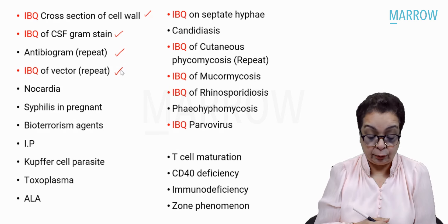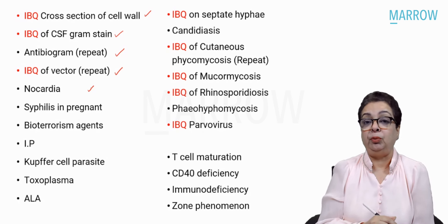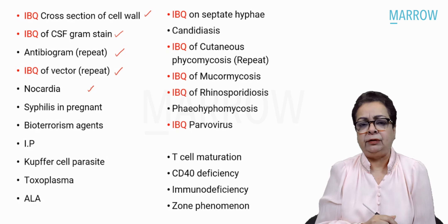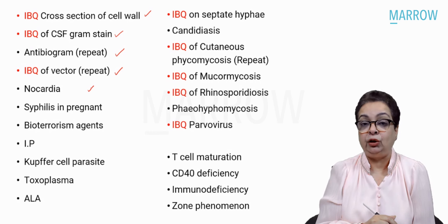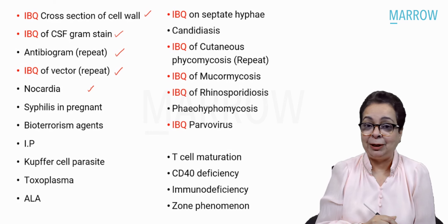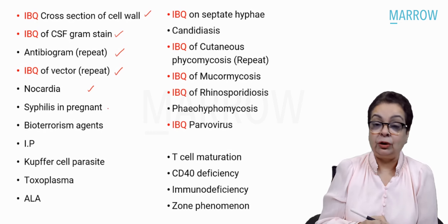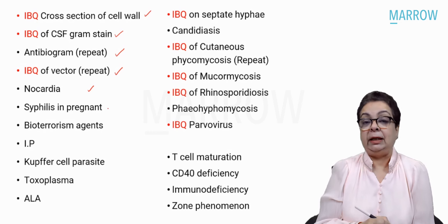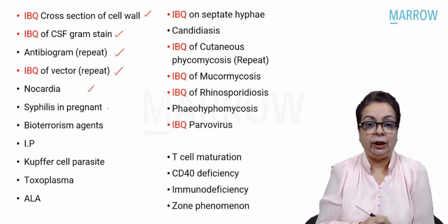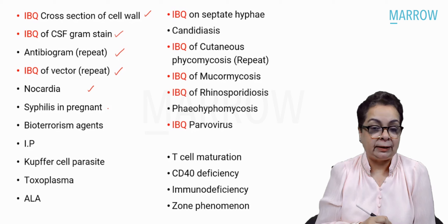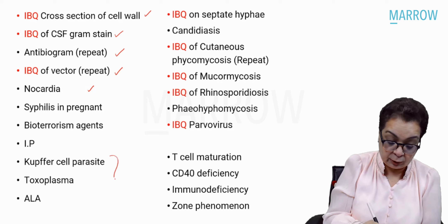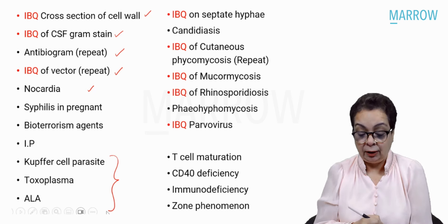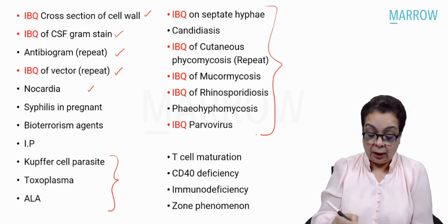Then we had an image-based question on the vector — the larva image was shown. Then a question from Nocardia; actinomycetes families are very commonly asked. If you know Nocardia and actinomyces are gram-positive filamentous organisms, you're sure to get one question right. Then we had a question on syphilis and pregnancy, then bioterrorism agents, matching of incubation periods, a parasite which infects Kuffer cells, toxoplasmosis, and amoebic liver abscess — three questions from parasitology.